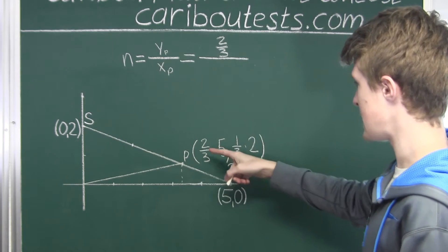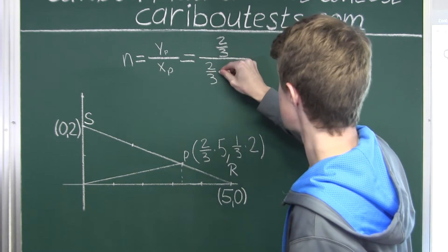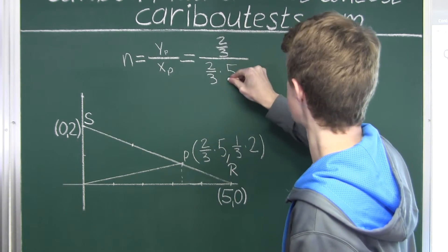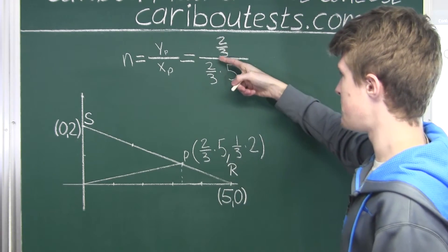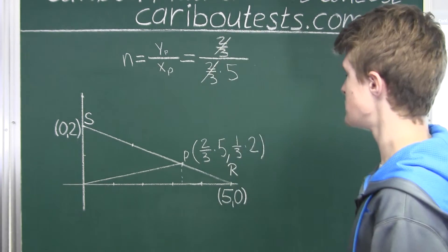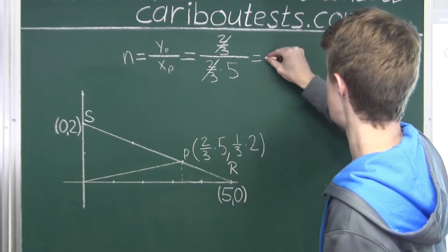Okay, and then we have 2 over 3. And the X coordinate, 2 over 3 times is 5. And 2 over 3 divided by 2 over 3 cancels out to 1. And then we have 1 over 5, which is just equal to 1 over 5.